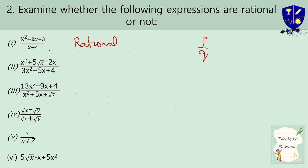Now the second scenario: it is written in P by Q form, but here there is a difference — the value of x is inside a root. When x appears under a root, it is not rational; it will be irrational. So write: not rational.